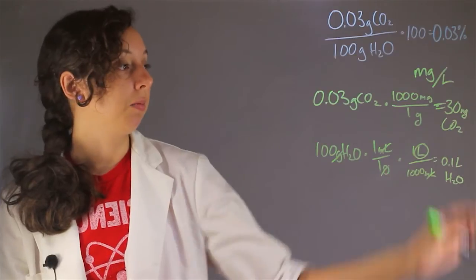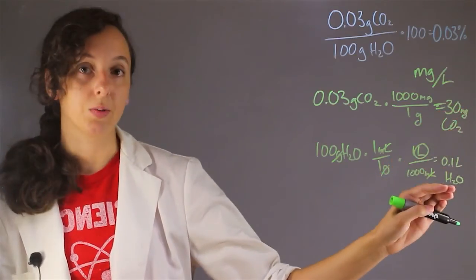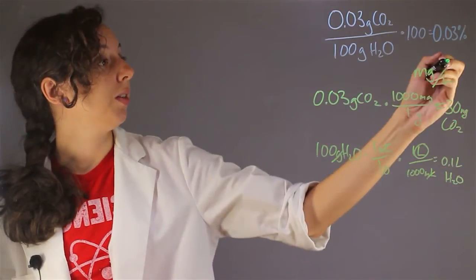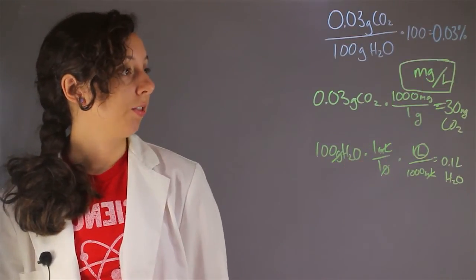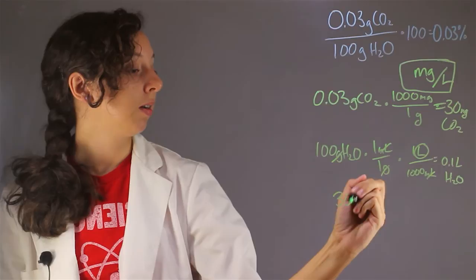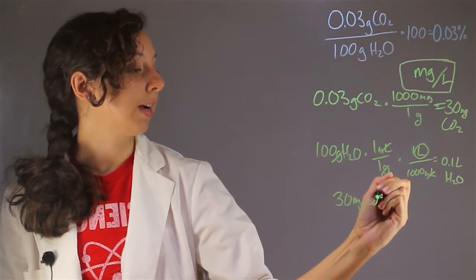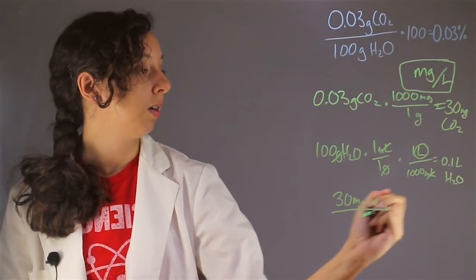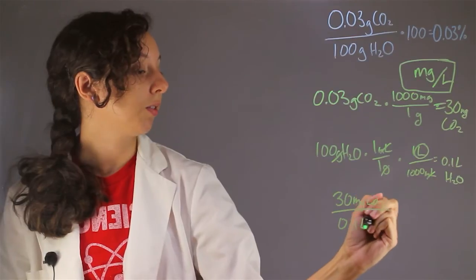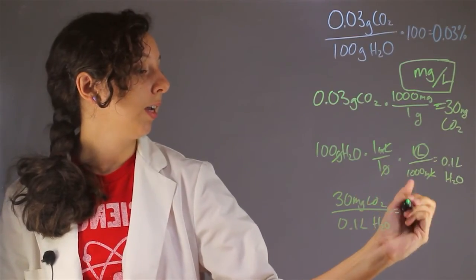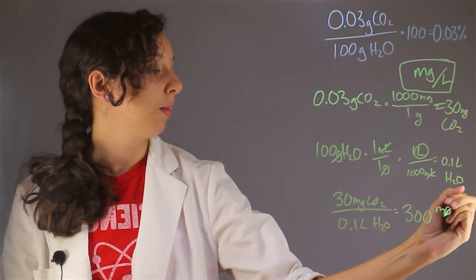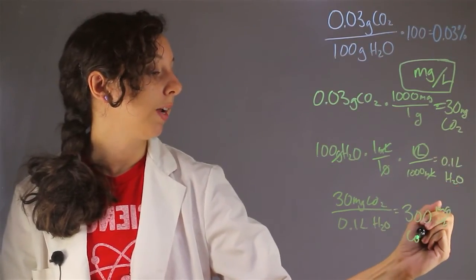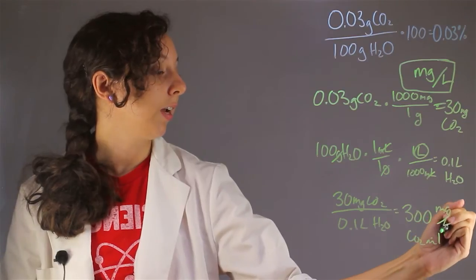So now we have how many milligrams we have and how many liters we have. And our final units are going to be in milligrams per liter. So all we have to do is take our 30 milligrams of carbon dioxide over our 0.1 liters of H2O. And we can see that our final answer is that we have 300 milligrams per liter of carbon dioxide in H2O.